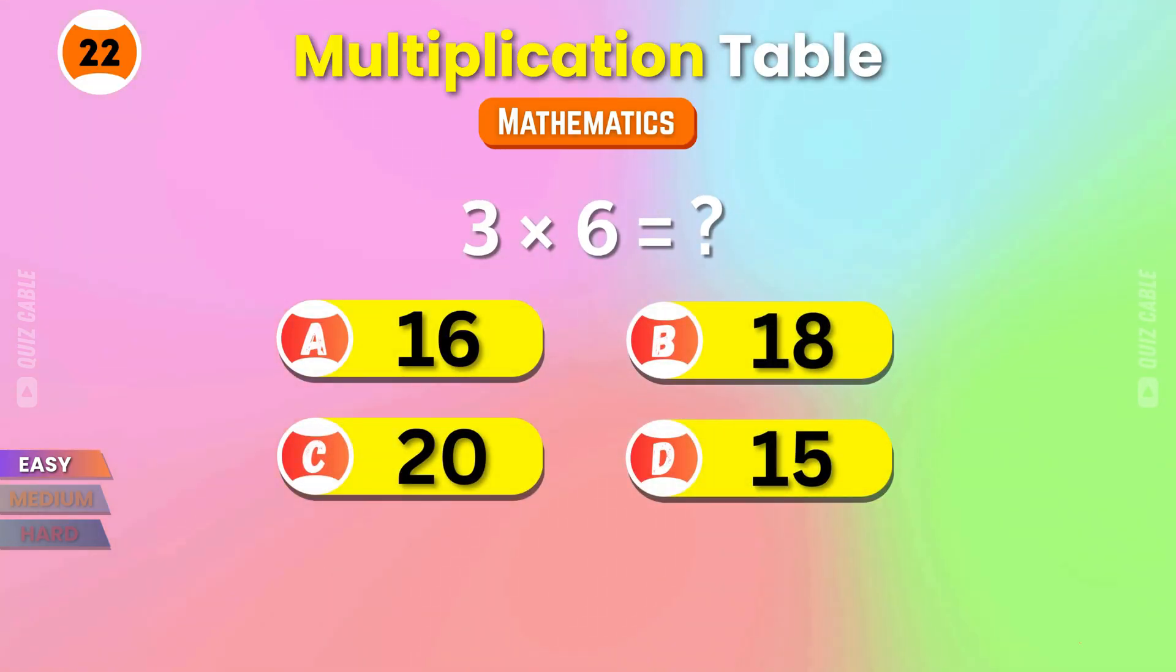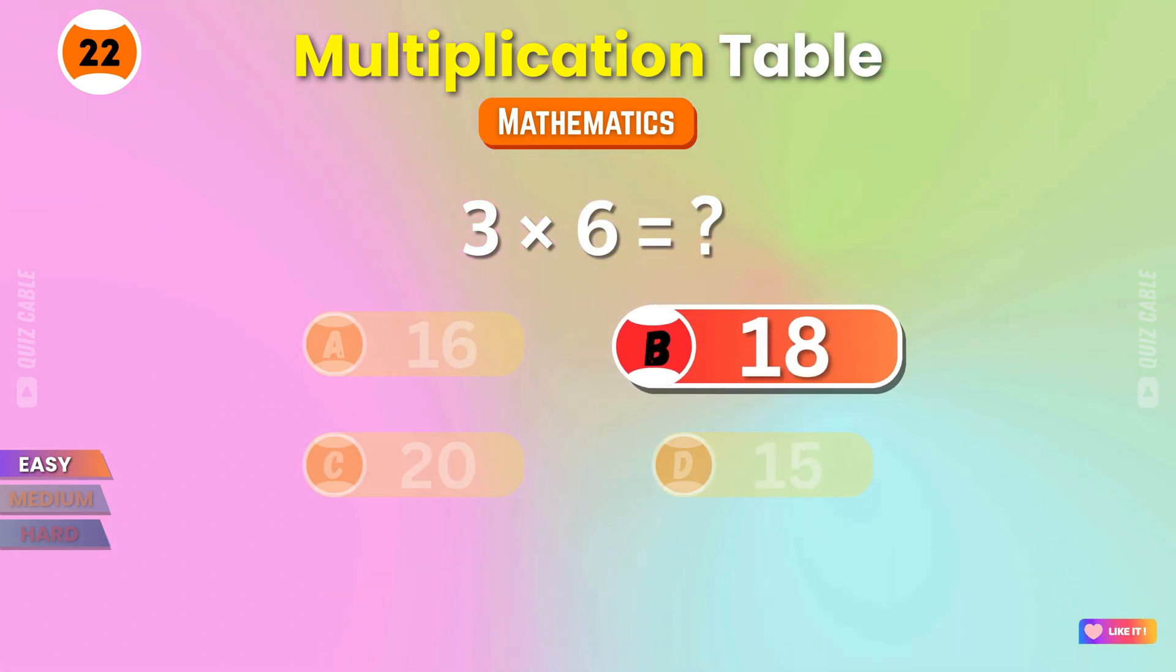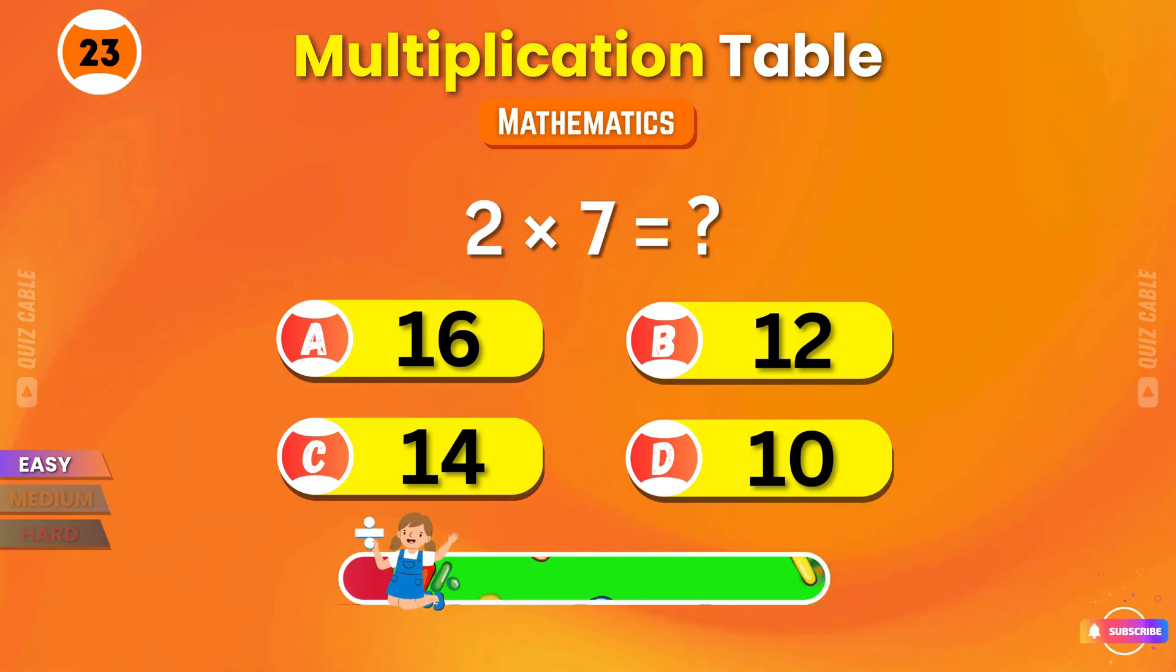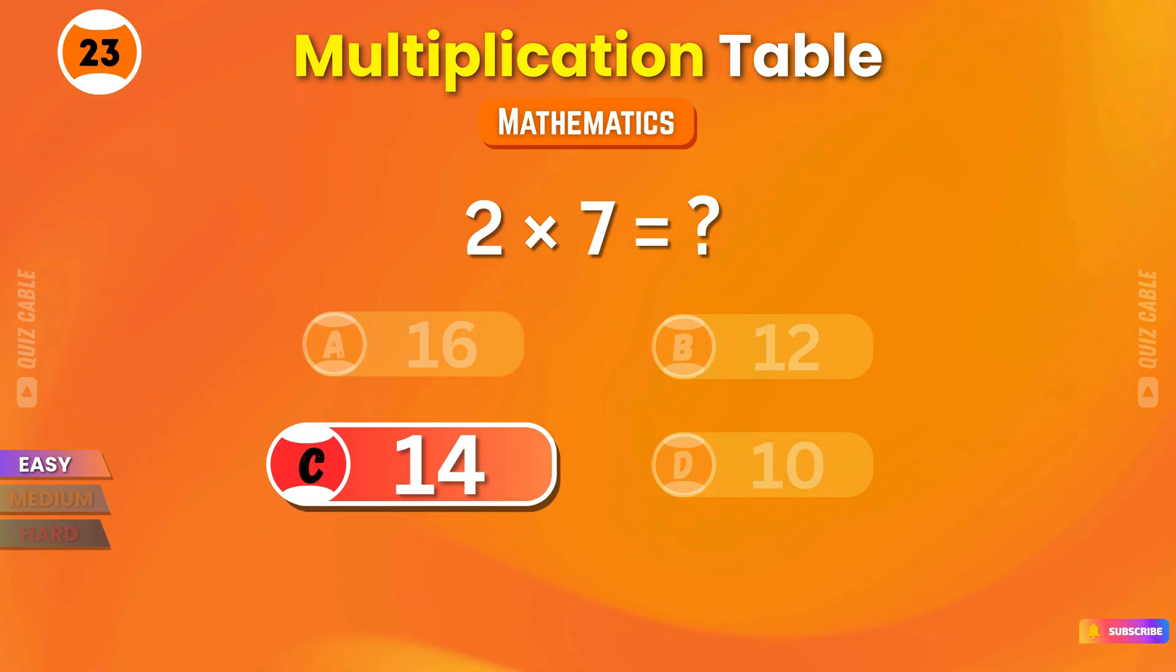3 times 6? 18! You're amazing! 2 times 7? 14! You're fast!